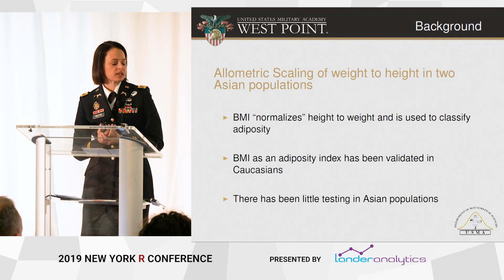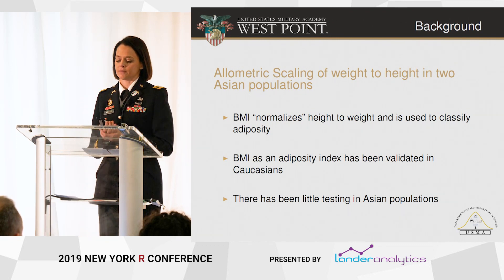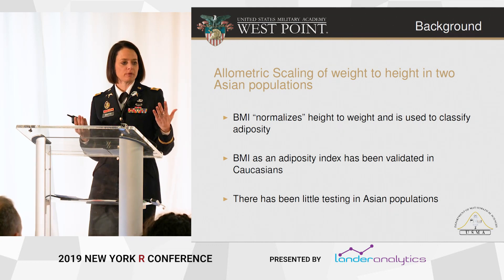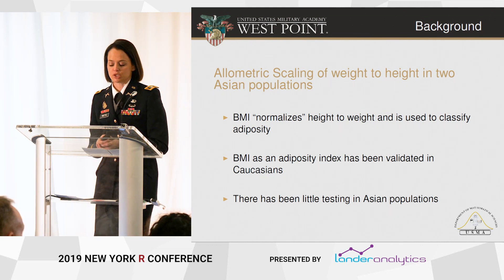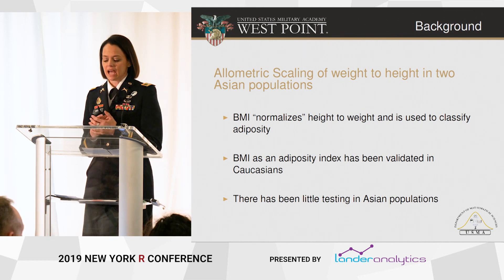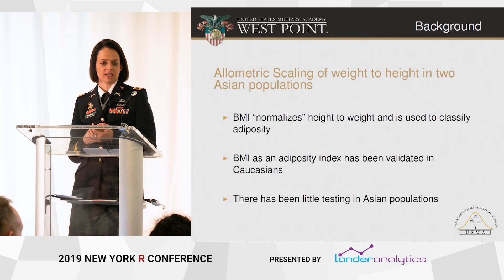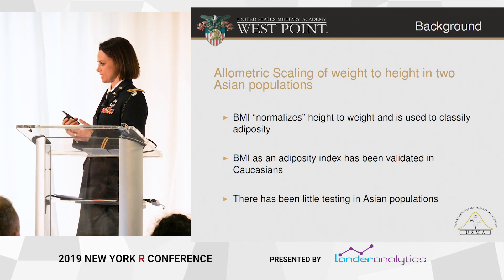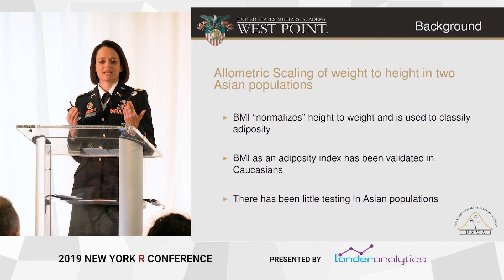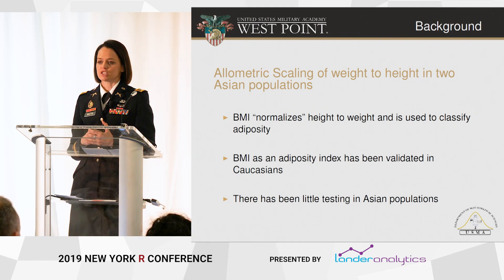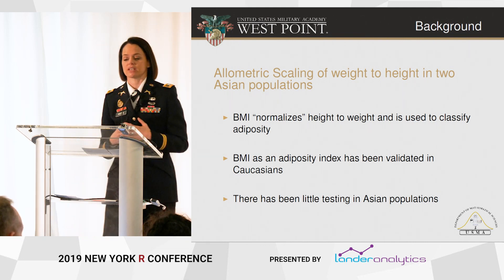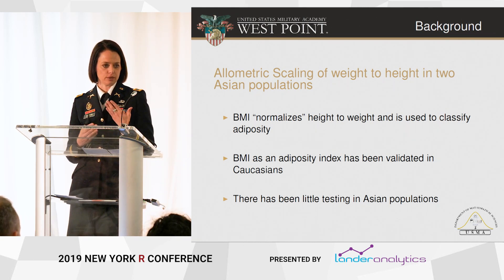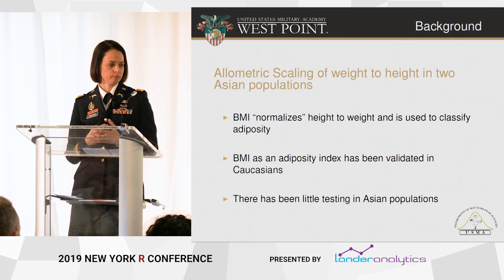The first one we were looking at is allometric scaling of weight to height in two Asian populations. Most of you are probably familiar with body mass index, BMI. It normalizes height to weight — if we have someone who's 4'10 and weighs 160 pounds and someone who's 6'10 and weighs 160 pounds, we don't really want to make a head-to-head comparison of those weights. BMI actually scales weight to height squared, and it's used to classify adiposity, obesity, and overweight status.